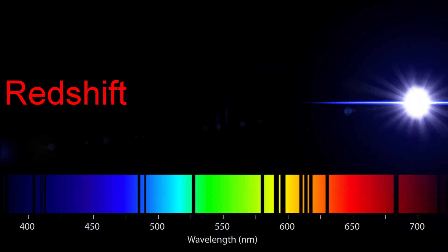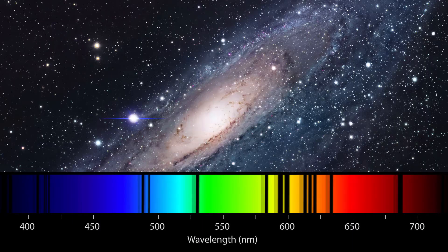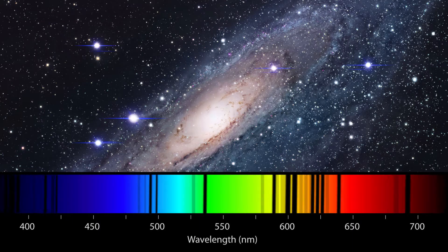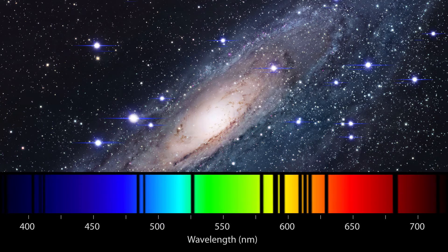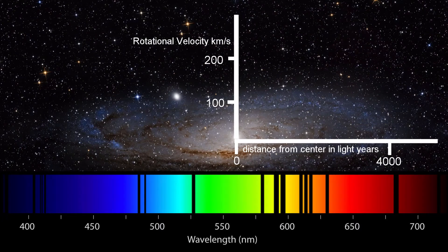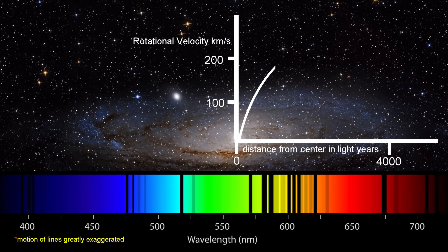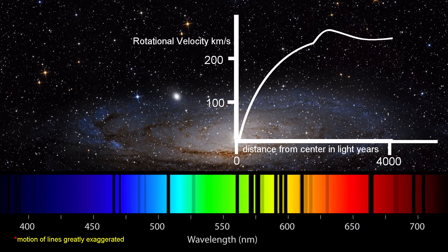Since everything in the universe is moving relative to something else, we can look at light coming from stars in the Andromeda Galaxy and determine if it's moving towards or away from us by detecting shifts in the Fraunhofer lines. If we start from the center of the Andromeda Galaxy and measure the redshift as we move towards the edge, we end up with what's known as a rotation curve.